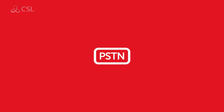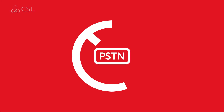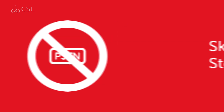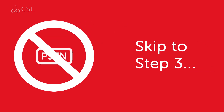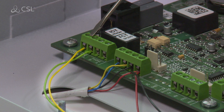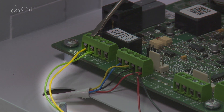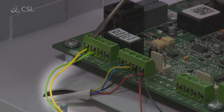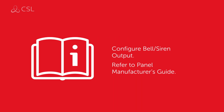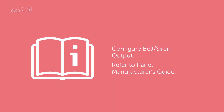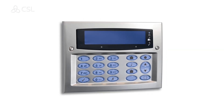If your panel doesn't have an onboard PSTN dialer, you will need to skip to step 3 for input only. Connect the green-yellow MiniAir wires to the PSTN dialer — this will simulate a telephone line. Configure the PSTN dialer of your alarm panel by referring to the manufacturer's guide. Next, choose SEER, CID, or FAST format.